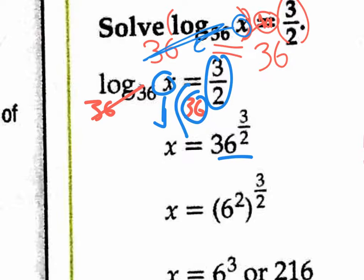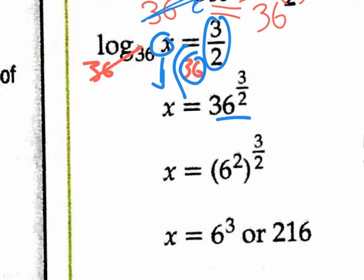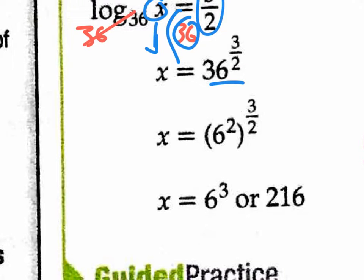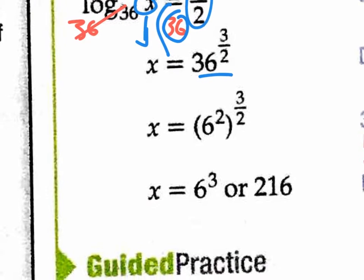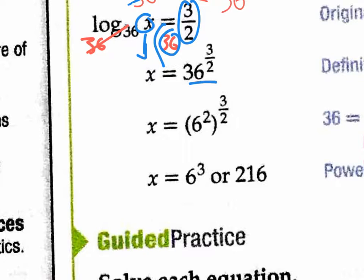They change 36 to look like 6 squared. Why would they do that? Because we know that a power to a power, you multiply. So 2 times 3 halves cancels out, and you end up with 6 to the 3rd. And 6 to the 3rd gives you the answer 216. So we are able to get rid of any type of log as long as we raise both sides of the equation to be the powers of the base that you had on the log to start with.